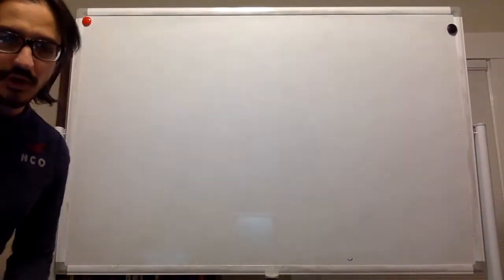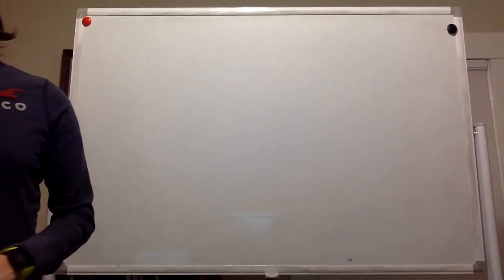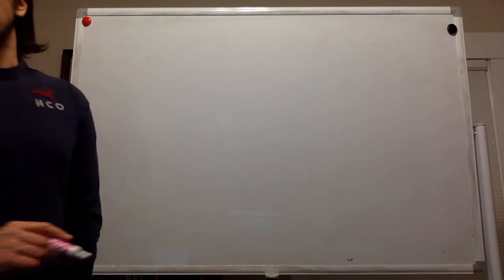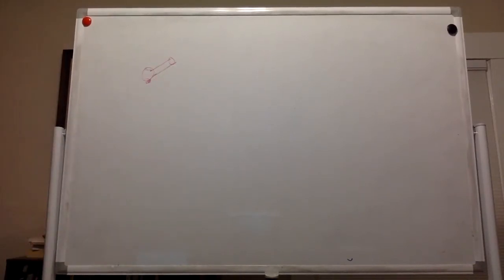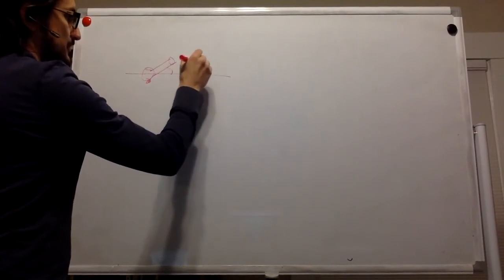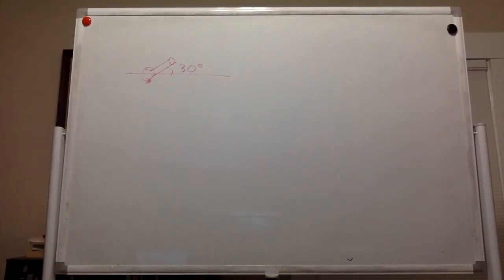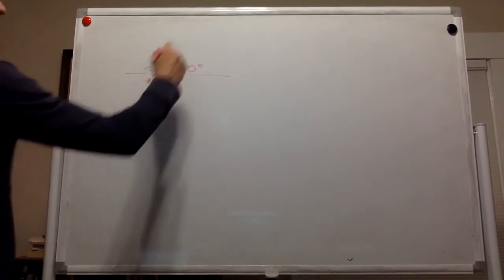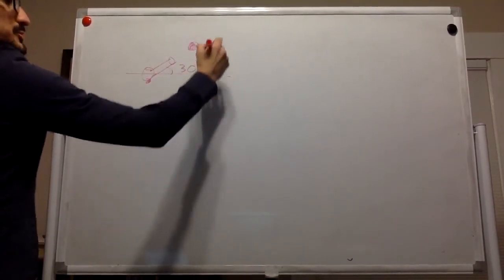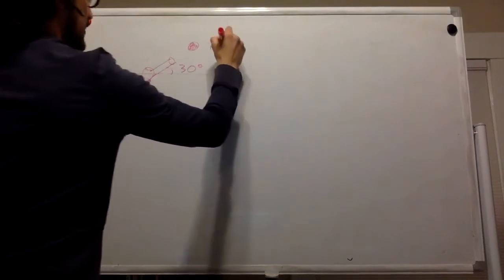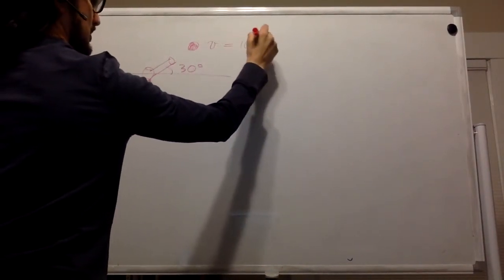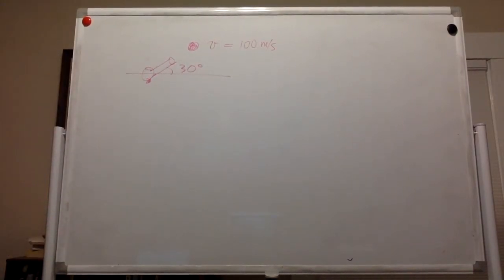Hello. So these are the warm-up problems. The first one says that a cannon is tilted upward 30 degrees with respect to the horizontal, and it's going to fire a cannonball with a speed of 100 meters per second. What is the component of the cannonball's velocity parallel to the ground?